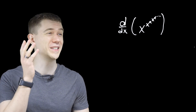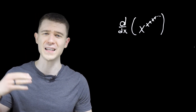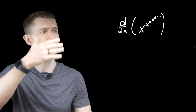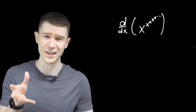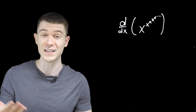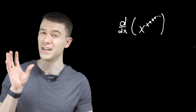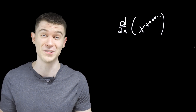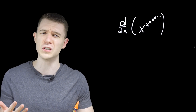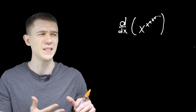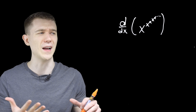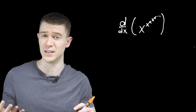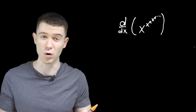How on earth do you suppose we take the derivative of this — x to the x to the x to the x to the x to the x — up forever, like an infinite tower of exponents of x's? Maybe you're used to doing just x to the x with logarithmic differentiation, and so maybe you think that's pretty much how we're gonna do it, and that is what I'm gonna do in this video, sort of.